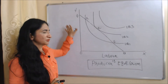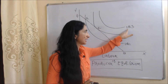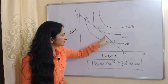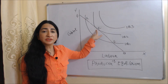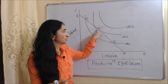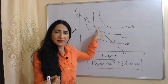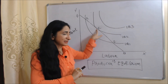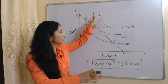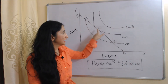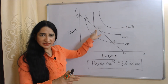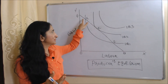In the diagram of producer's equilibrium, on the x-axis we have labor and on the y-axis we have capital. IQ1, IQ2, and IQ3 are our isoquant curves, and line AB represents our iso cost line. Point E is our producer's equilibrium point — here the isoquant is tangent to the iso cost line, the slopes are equal, and the isoquant is convex to the origin.